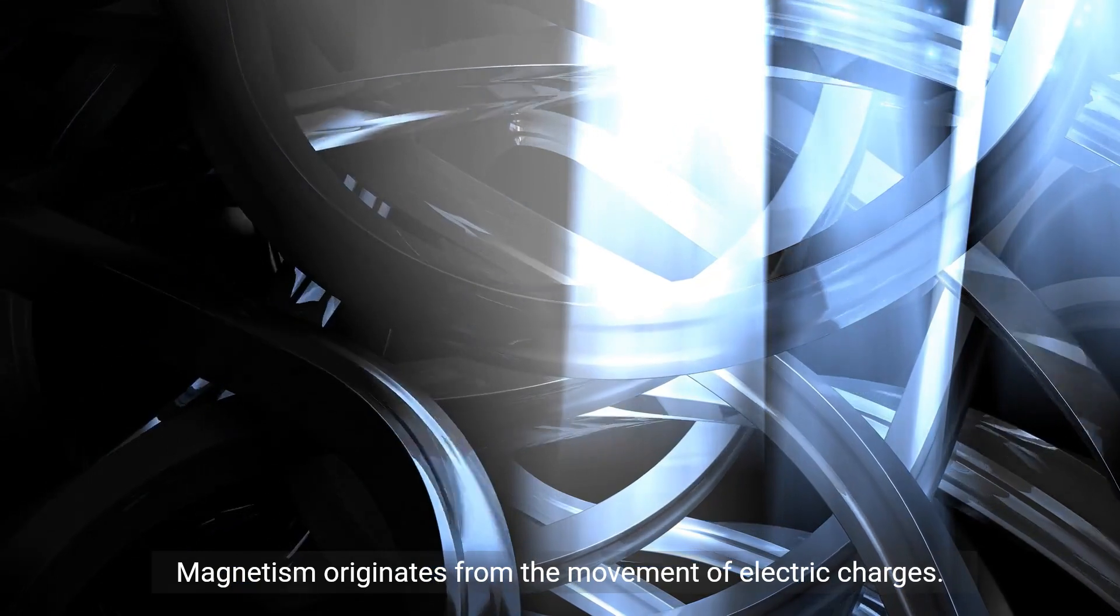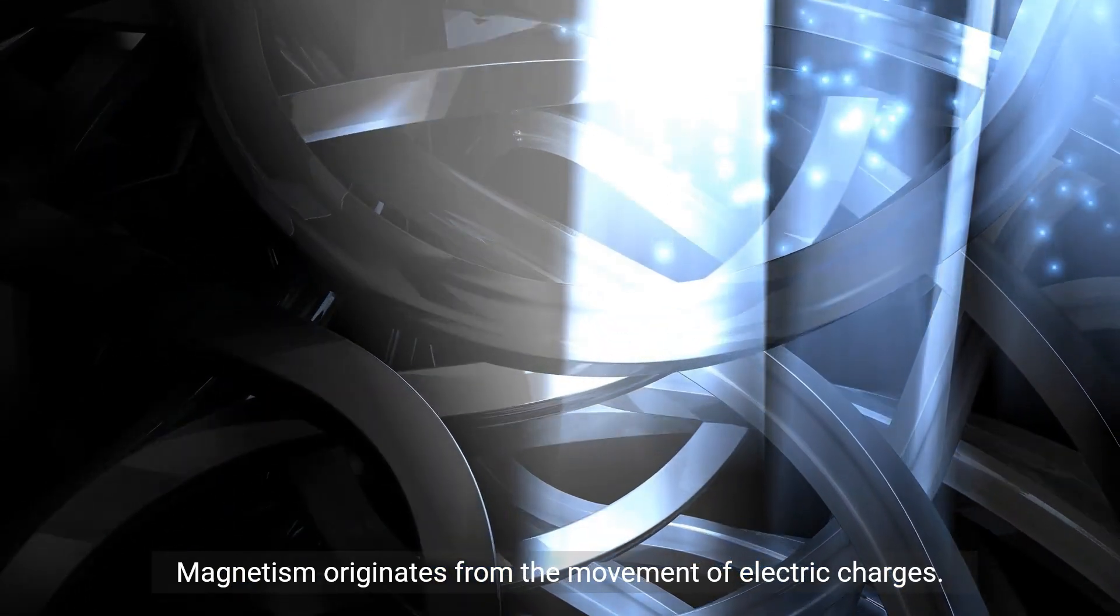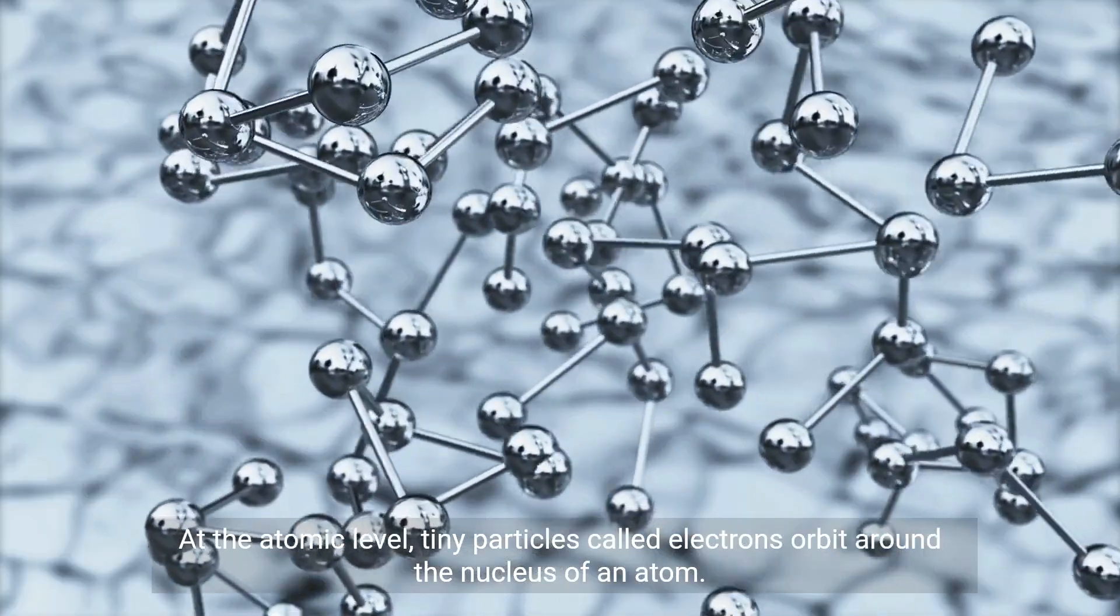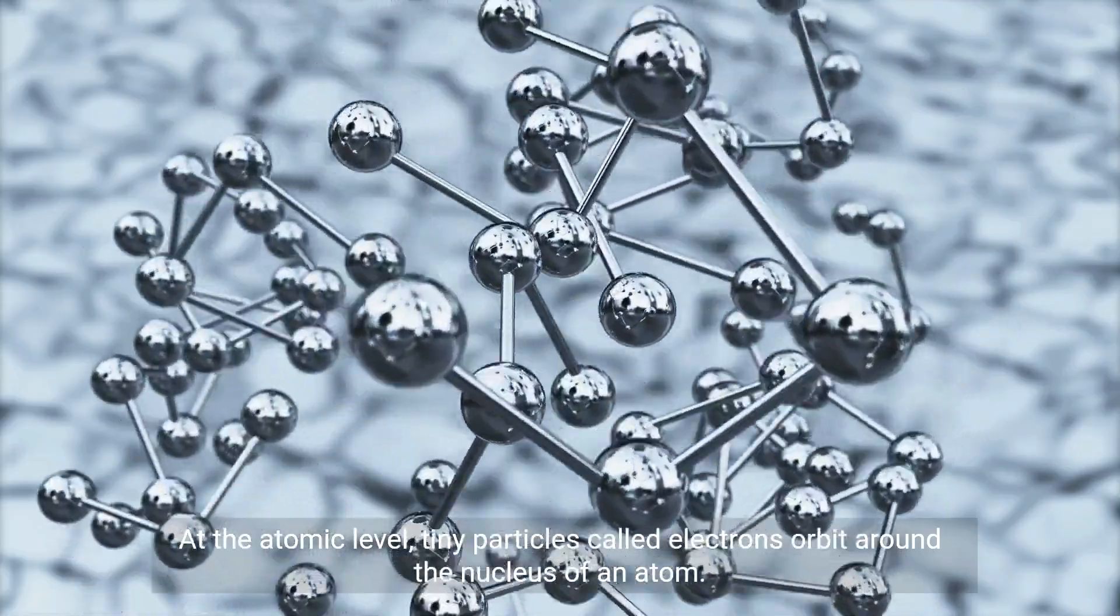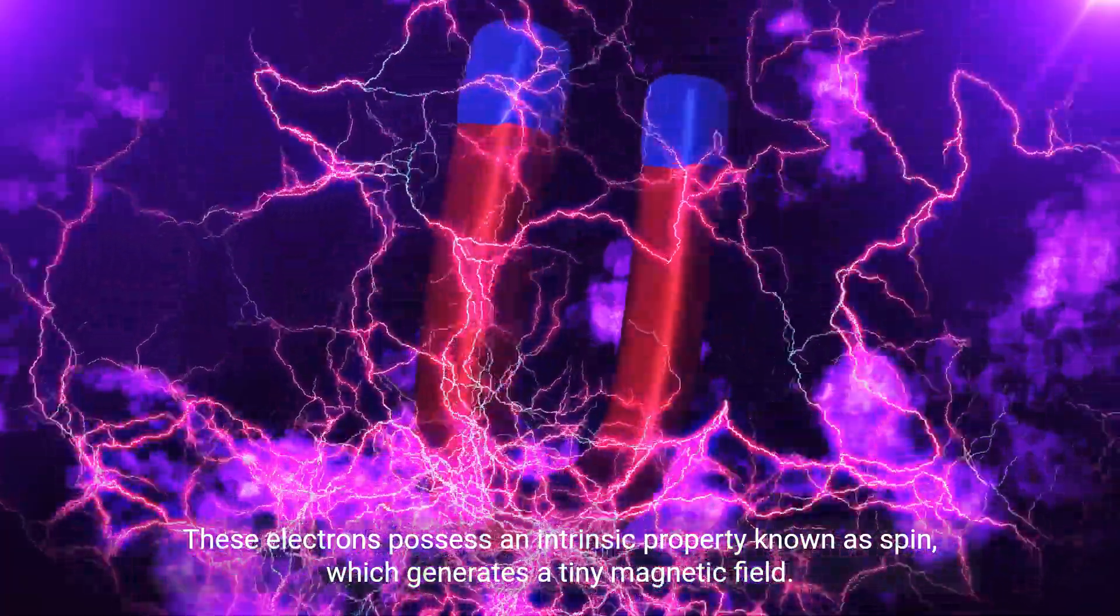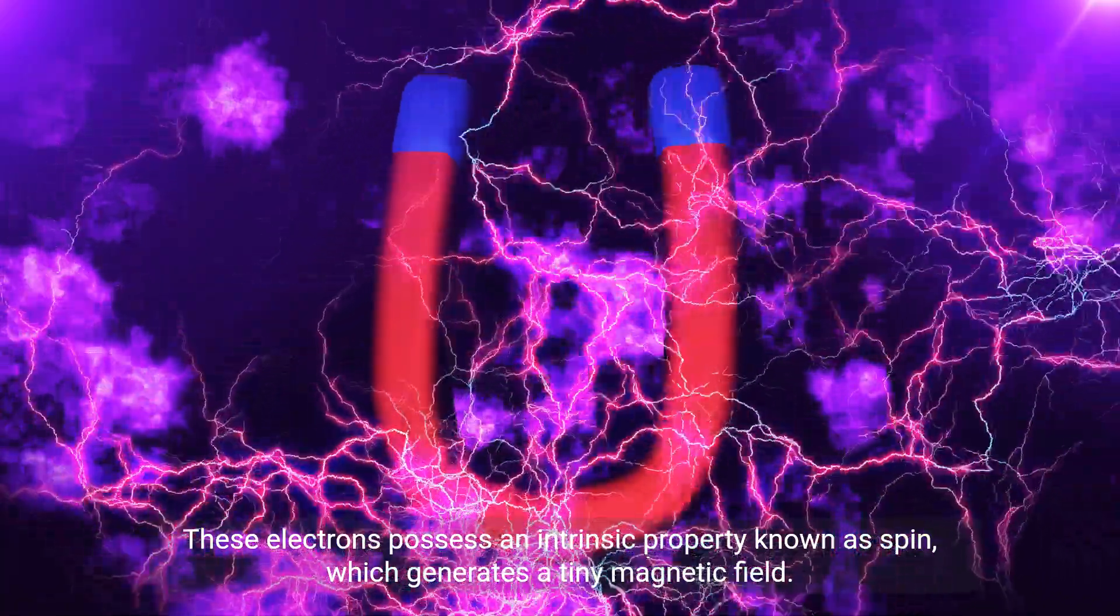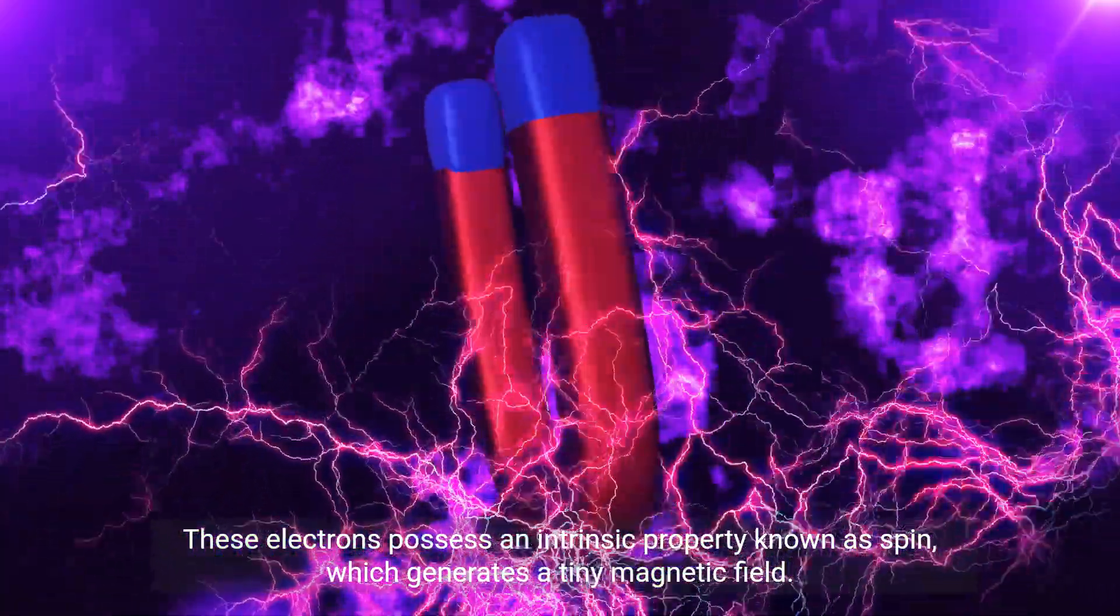Magnetism originates from the movement of electric charges. At the atomic level, tiny particles called electrons orbit around the nucleus of an atom. These electrons possess an intrinsic property known as spin, which generates a tiny magnetic field.